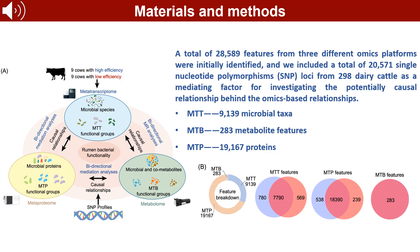We analyzed Rumen microbiota from 9 high and 9 low feed efficiency dairy cows using MTT, MTP, and MTB data. We identified 28,589 features and 20,571 SNP loci. MTT found 9,139 microbial taxa, MTB revealed 283 metabolites, and MTP included 19,167 proteins.